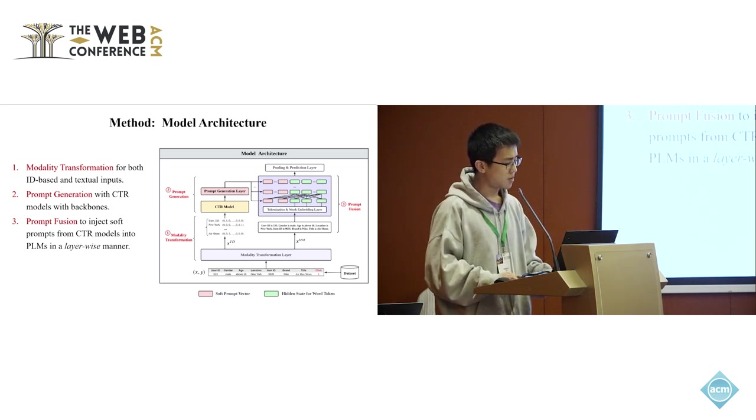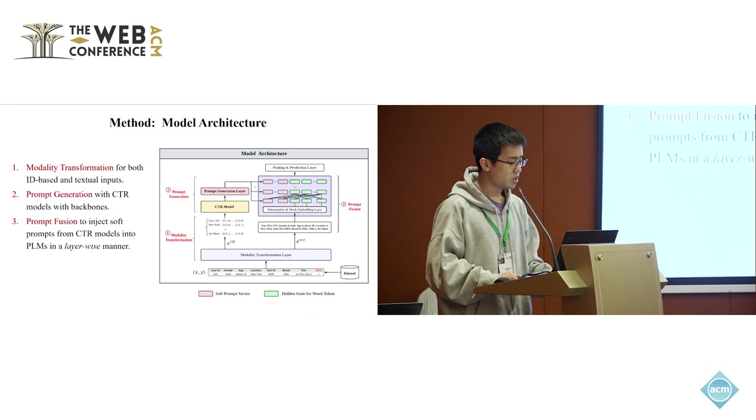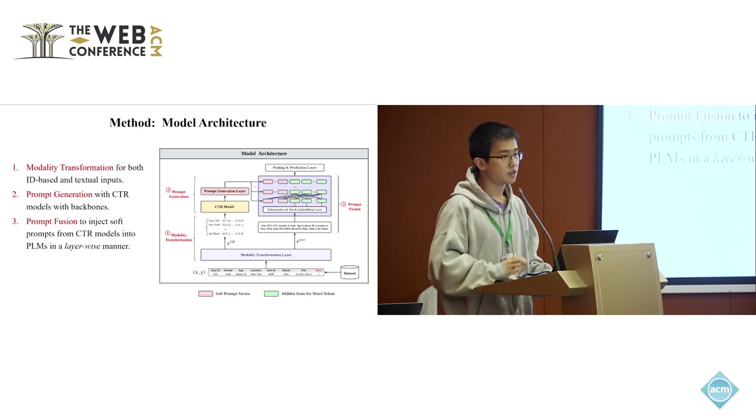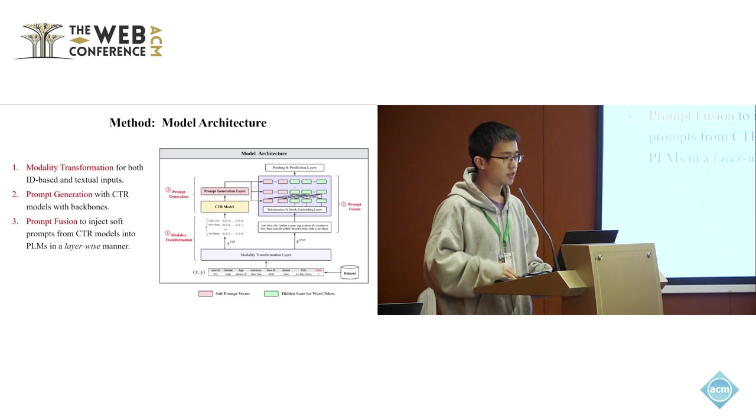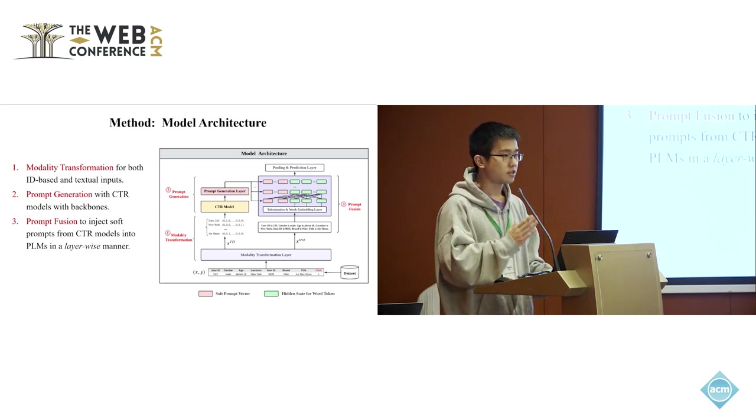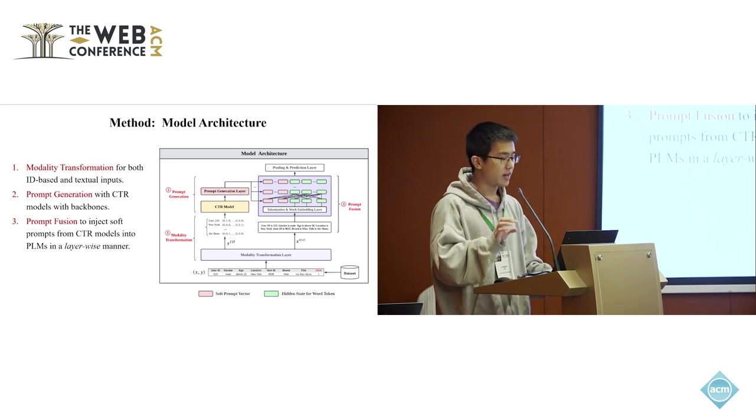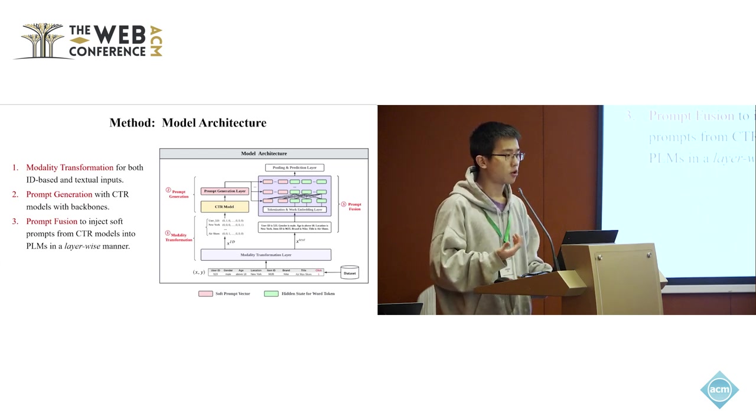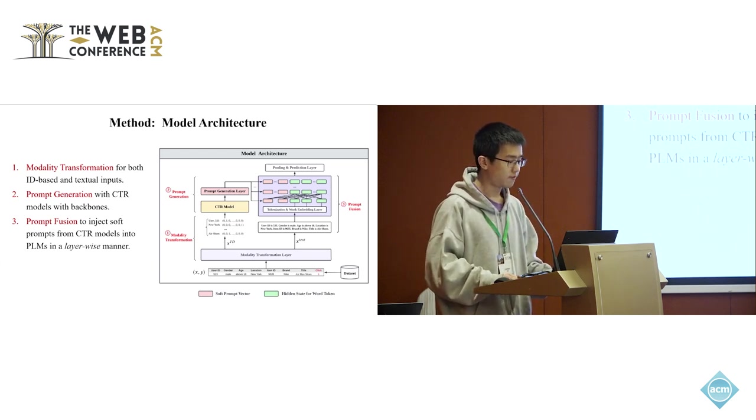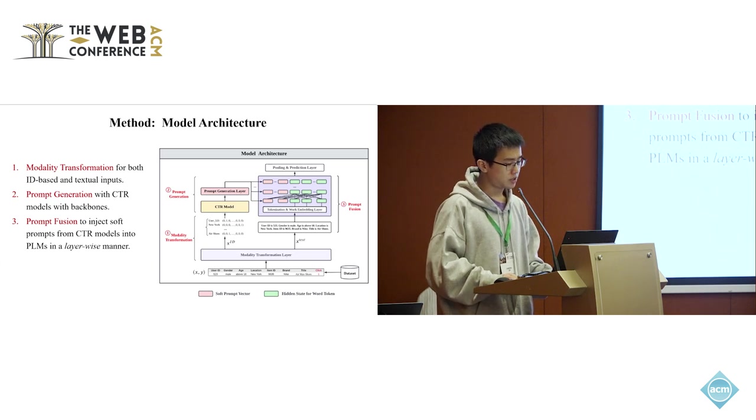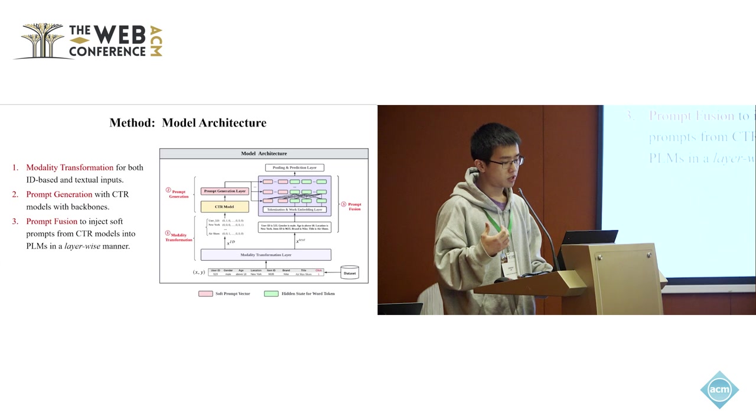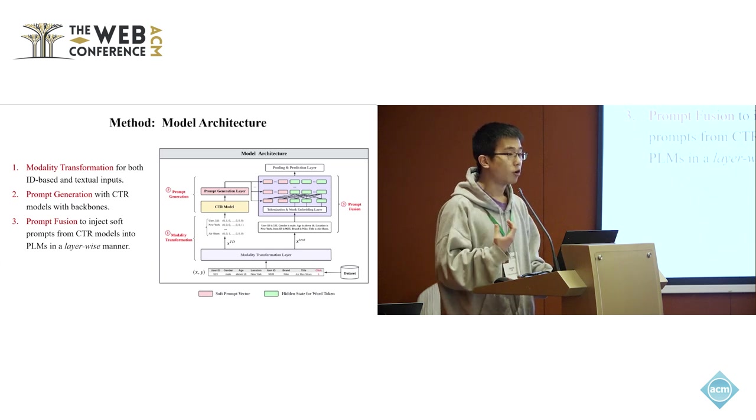In the prompt fusion component, the previously generated soft prompts will serve as the prefix hidden states at each transformer layer of the language model. Unlike those traditional or common prompt tuning, which only feed the soft prompts at the input layer, we do this because we think that the semantic information comes from the textual side and might be overwhelming.